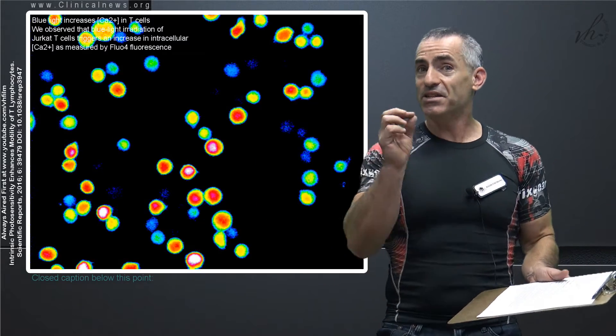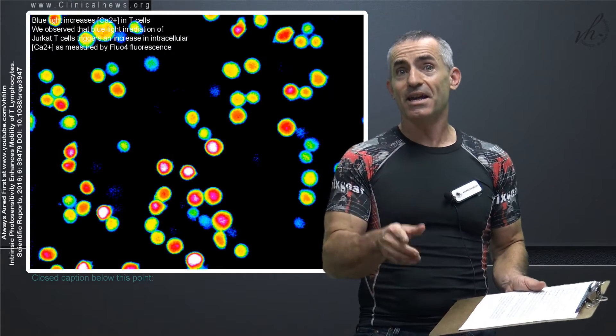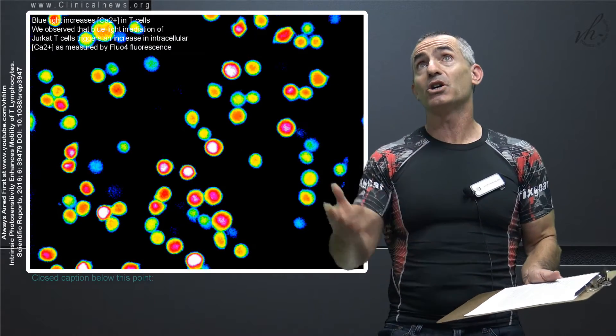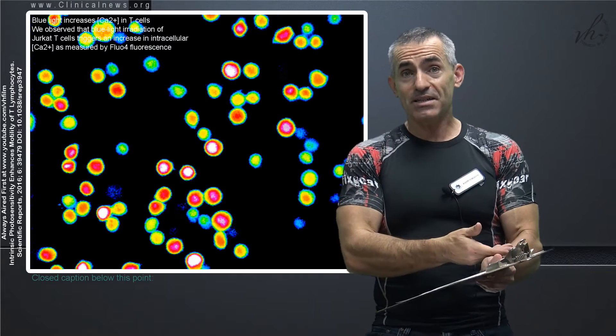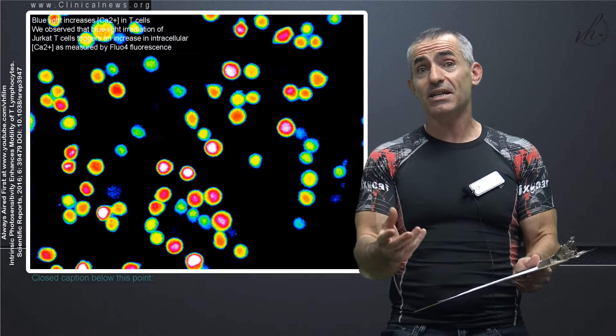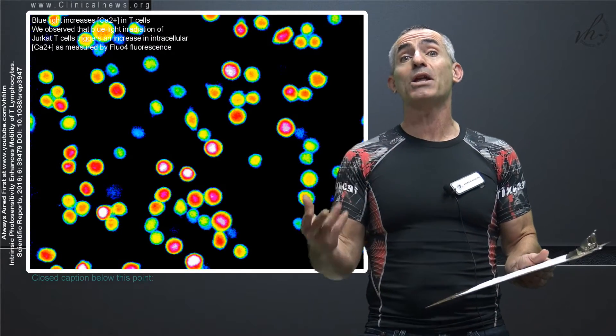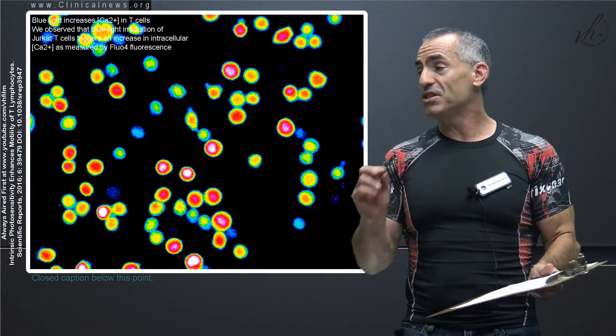They become more mobile and these are T cells normally found in the skin. The reason this is important is because when the sunlight activates the T cells in your skin, those T cells can then travel throughout the remainder of the body. This is just insane.